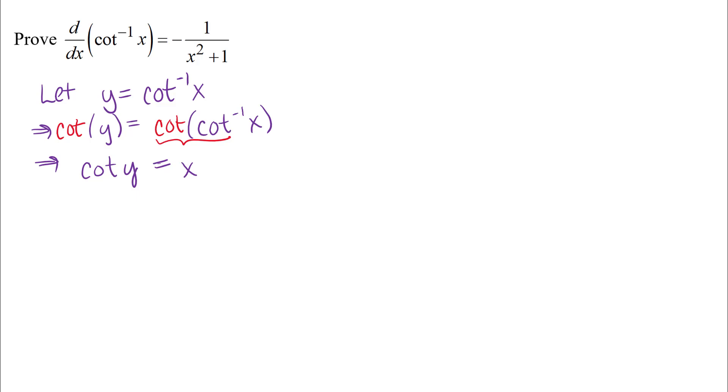And then if you remember what we also did in the last video, we then used implicit differentiation. So if I just differentiate both sides of this equation with respect to x, I'm going to write that differential operator in bright red here. Derivative with respect to x of cotangent y on the left is going to equal derivative with respect to x of x on the right.